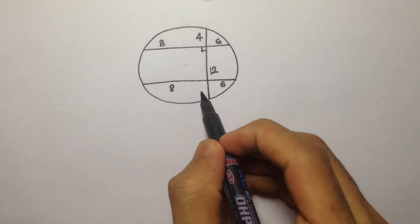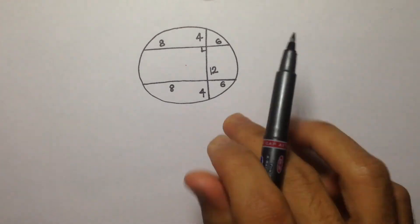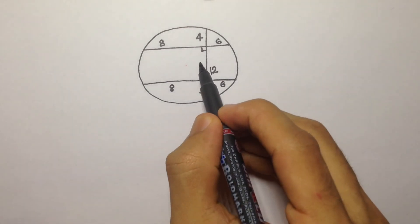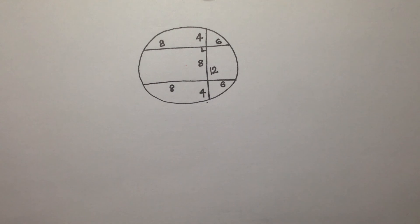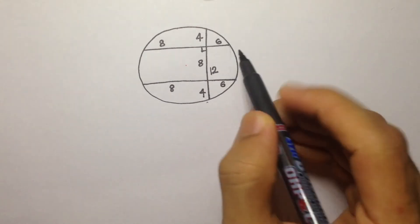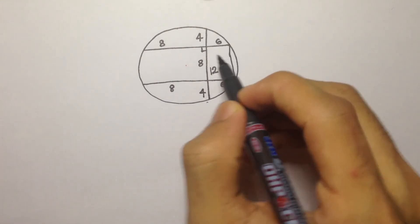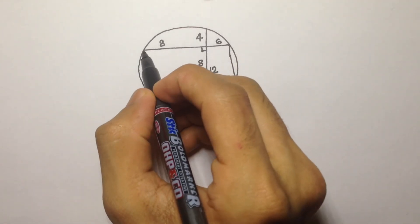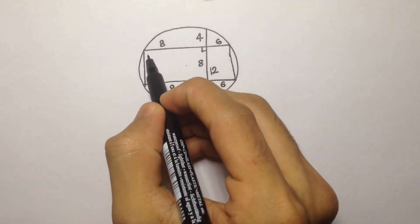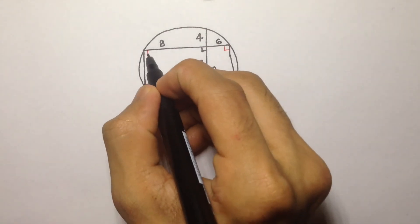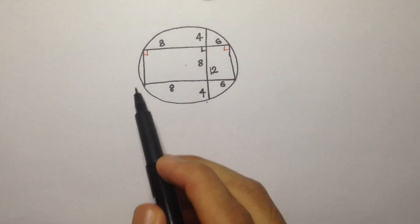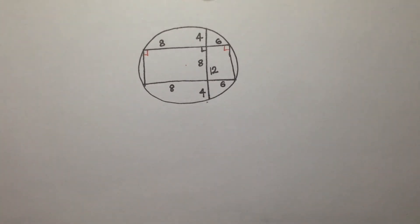It's as if we put a mirror along the diameter — everything above is reflected below. The length of 4 above the intersection becomes 4 below, and the total segment of 12 means the reflected piece is 8. Now we can connect the endpoints of these chords to form a quadrilateral. Since the original chords intersect at a right angle, this quadrilateral is a rectangle.